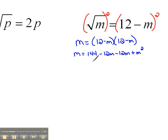And now we can collect our like terms. So we would have m equals 144 minus 24m plus m squared.